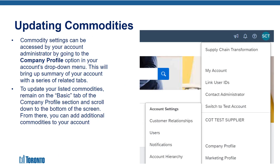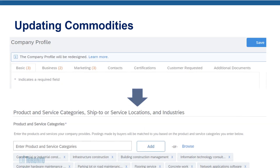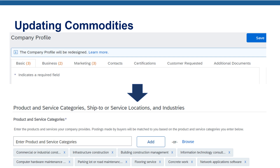To update your commodity settings, the account administrator of your Ariba account logs into your organization's SAP Ariba Business Network Discovery account and clicks on their initials in the top right-hand corner. This time, when the drop-down menu appears, they would select the Company Profile option. This will bring up a summary of your organization's account with a series of related tabs. To update your listed commodities, remain on the Basic tab of the Company Profile section and scroll down to the bottom of the screen. From there, you can add additional commodities to your account.